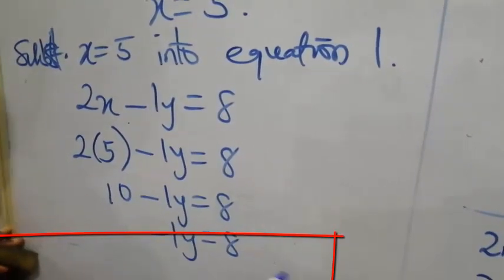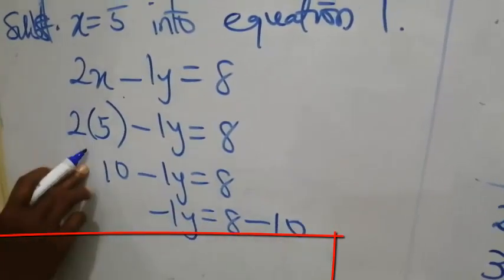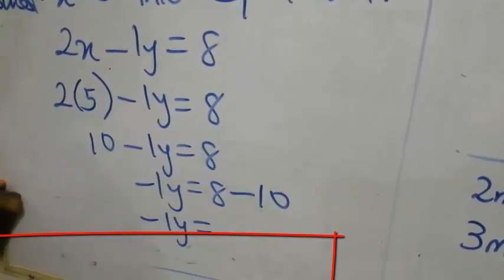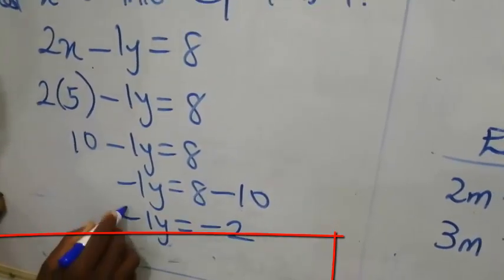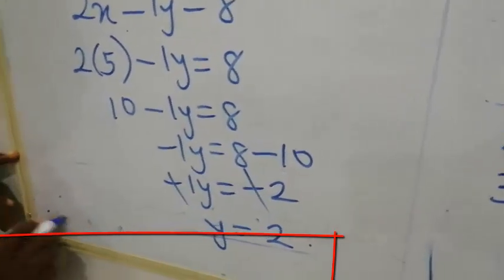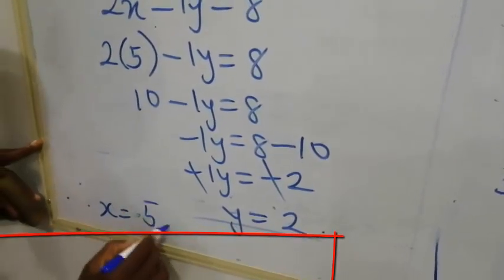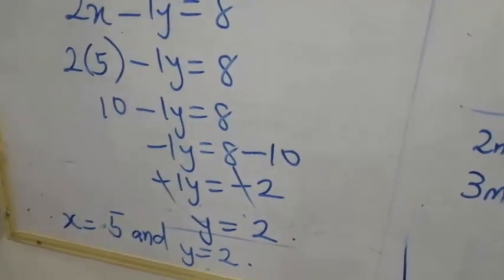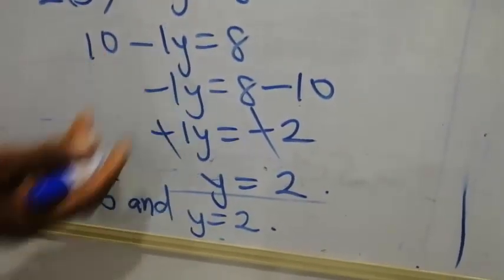Then, this crosses to the other side. Once it crosses equality sign, the sign changes from positive to negative. Minus 1y equals to 8 minus 10. Then, that is minus 2. Minus cancel minus. Y is equal to 2. You can say, therefore, x is equal to 5 and y is equal to 2. Those are the value of variable x and y.